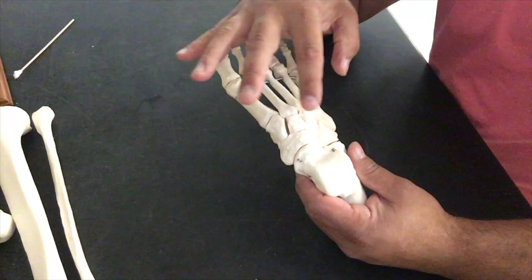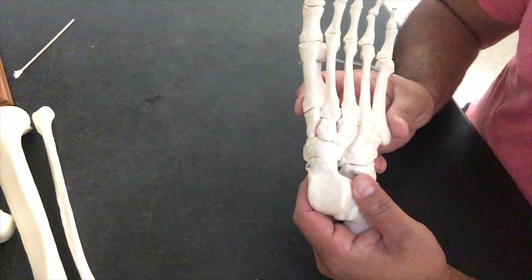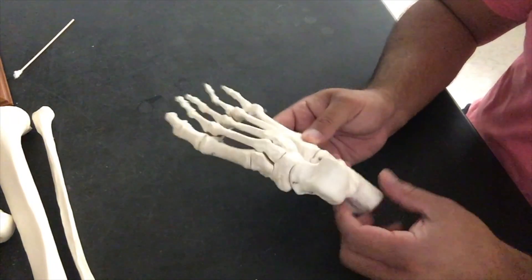Now, we have one, two, three cuneiforms. The cuneiforms are going to be named based on directional terms. So you know this is the big toe. This is going to be a right foot.